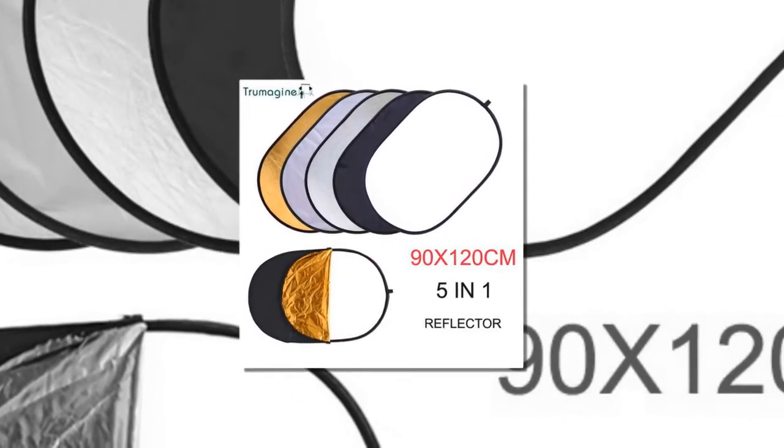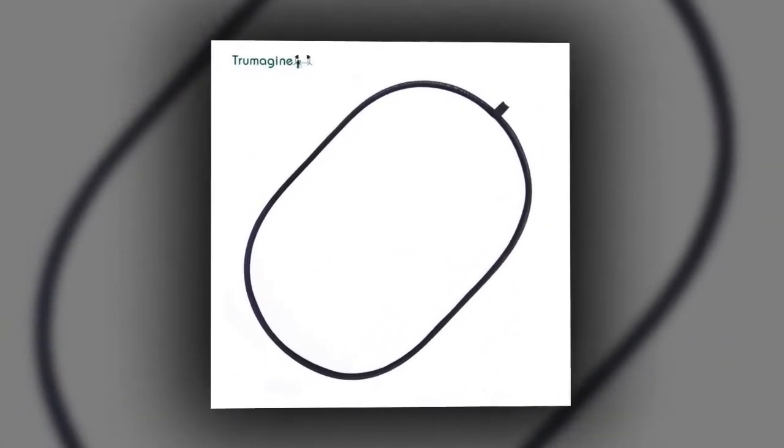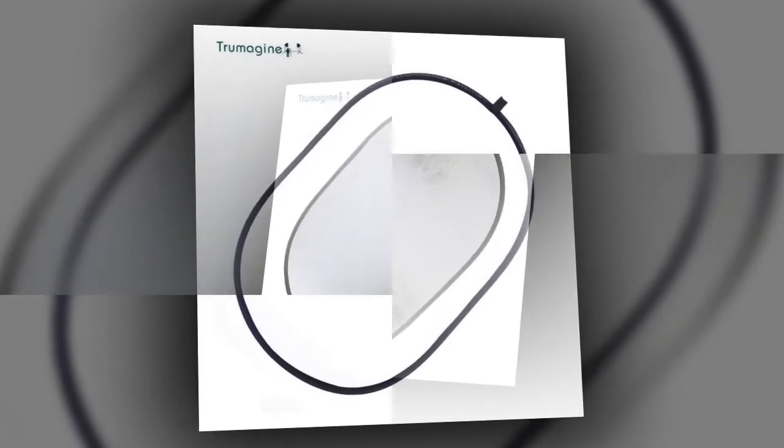5-in-1 portable and collapsible. The reflector with 5 different reflective surfaces can be used to fill in, reflect, diffuse, absorb or soften light.